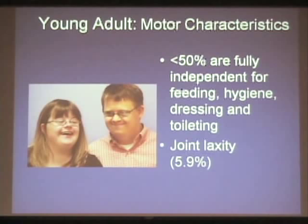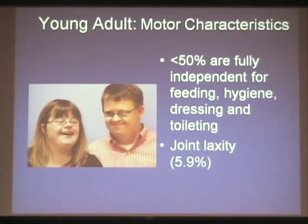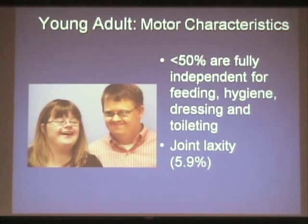Moving into young adulthood — one study found that less than half of young adults with Down syndrome were fully independent across all four areas: feeding, hygiene, dressing, and toileting. Most adults I see today do manage most of those tasks, so this data may be somewhat dated. However, complete independence is not always achievable, partly due to cognitive issues and partly because people with Down syndrome are not always as good at self-preservation as others at the same cognitive level — perhaps because they're more altruistic.